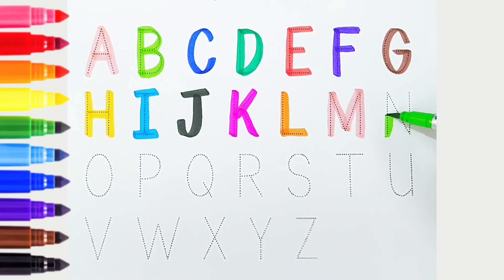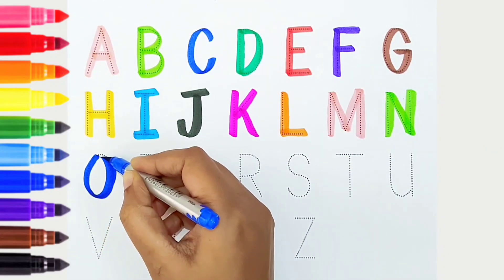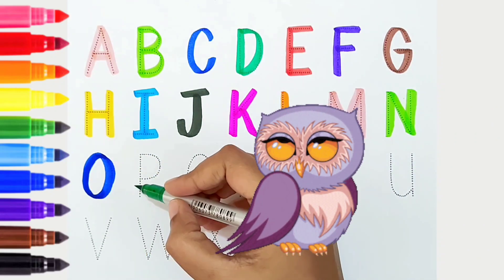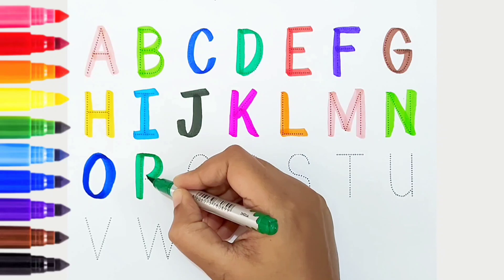N, light green color, is for nest. O, dark blue color, is for owl. P, dark green color, is for pen.